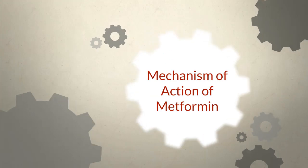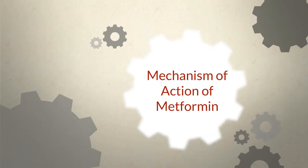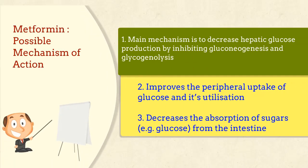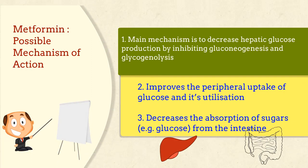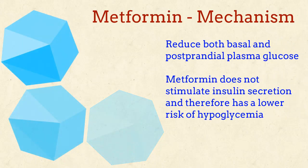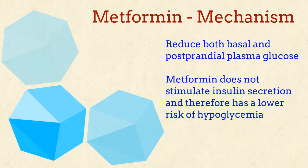What is the possible mechanism of action of metformin? The main action is to decrease hepatic glucose production by inhibiting gluconeogenesis and glycogenolysis. It also improves the peripheral uptake of glucose and its utilization. It decreases the absorption of sugars, such as glucose, from the intestine. Metformin also reduces both basal and postprandial plasma glucose. Metformin does not stimulate insulin secretion and therefore has a lower risk of hypoglycemia.